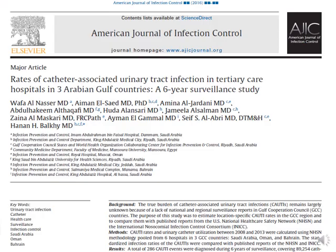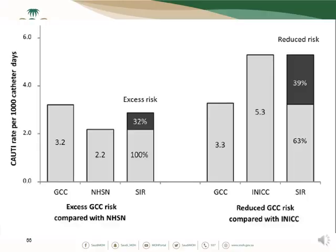This has been published in the American Journal of Infection Control as a major article about the CAUTI rate in GCC countries. Looking at the left side, it shows the excess GCC rate compared to NHSN: GCC is 3.2, NHSN is 2.2, and the excess is 32%. On the right side, it shows a 39% reduction in GCC CAUTI risk compared to INIC.